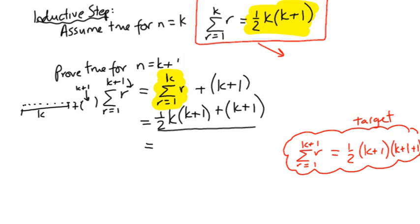Is there any way in which we can get this bit here to look like this bit over here? Well, what we're usually trying to do is take a common factor. You notice that we've got a common factor of k plus 1. So let's do that. k plus 1. And what we're left with is a half k plus 1. Okay, does that look anything like it? Yeah, well, okay.